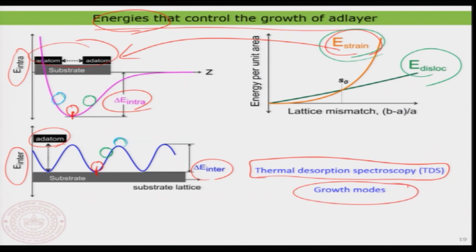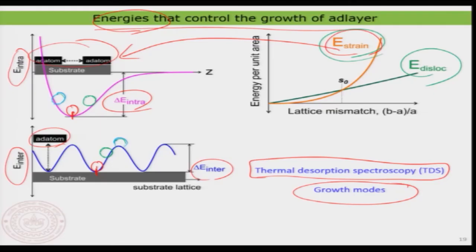These energies also control the type of growth modes. For atom-like adsorbates, there are three different types of growth: layer-by-layer growth, island-type growth, and a mixed mode with a wetting layer followed by island formation. The factors controlling these growth modes are directly related to the energies. This is one of the most important parts of the lecture for understanding the adsorption and growth of atoms on surfaces.